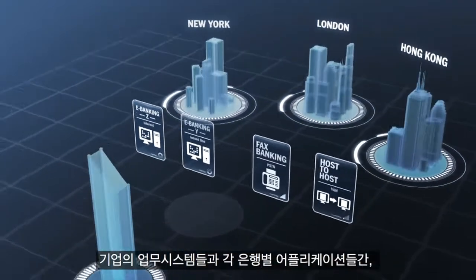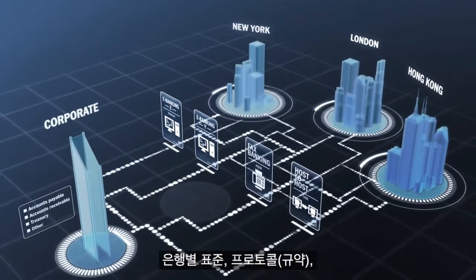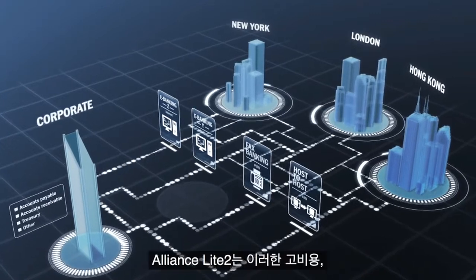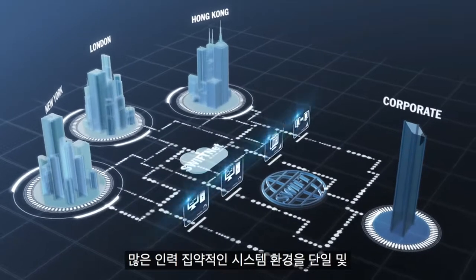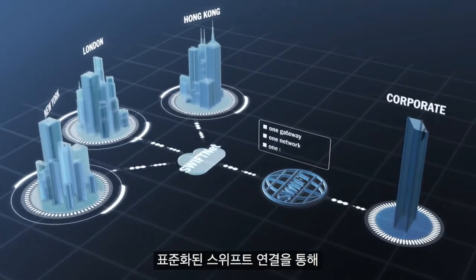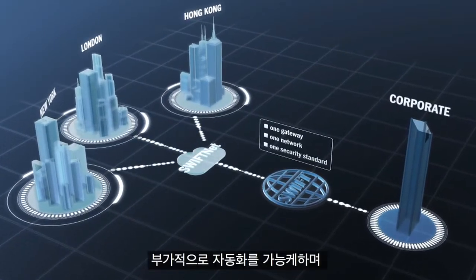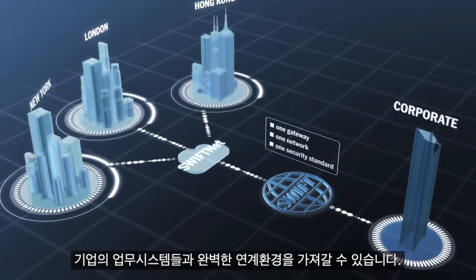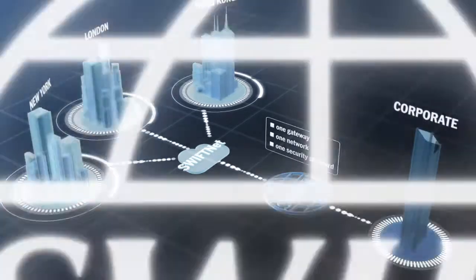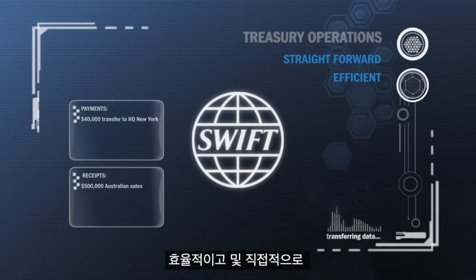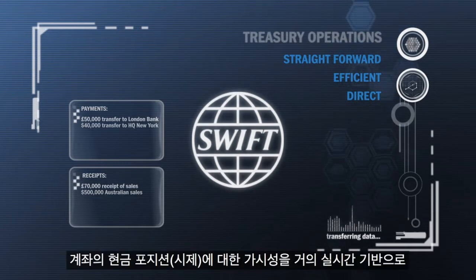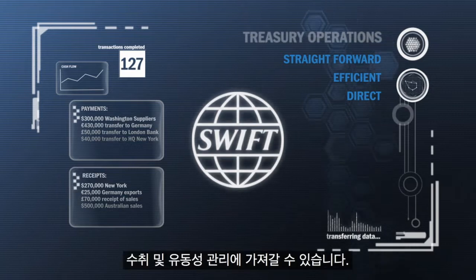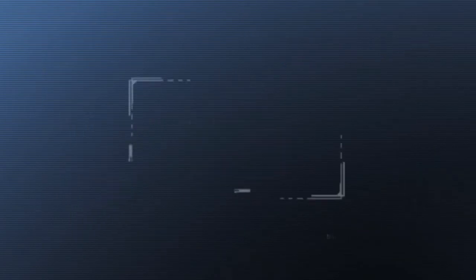Each channel has its own applications, standards, and protocols — many requiring manual processing. Alliance Lite 2 replaces these costly and resource-heavy systems with a single standardized Swift connection that enables additional automation, increased straight-through processing, and full integration with your business applications. Your treasury operations become straightforward, efficient, and direct, while the up-to-the-minute view of your cash position puts you in complete control of your payments, receipts, and liquidity management.